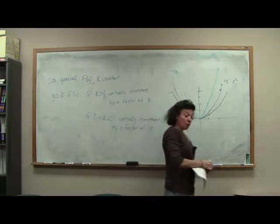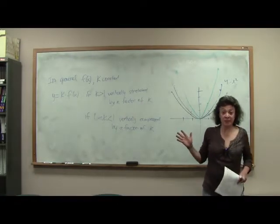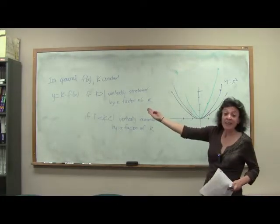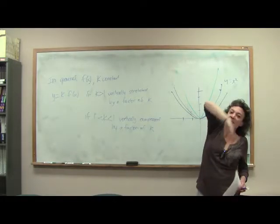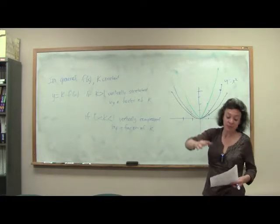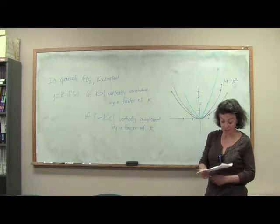Notice, we're only looking at positive values. Why? Because if k is negative, remember that reflects your graph about the x-axis. That's what we discussed in the previous section.